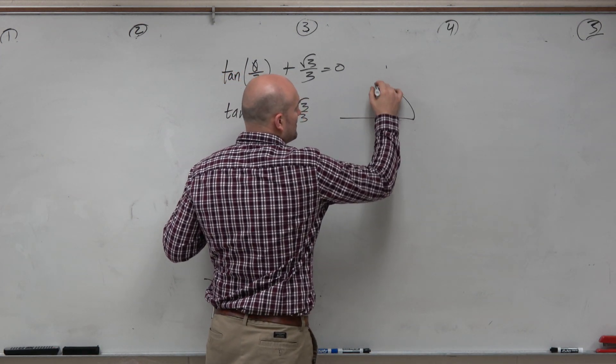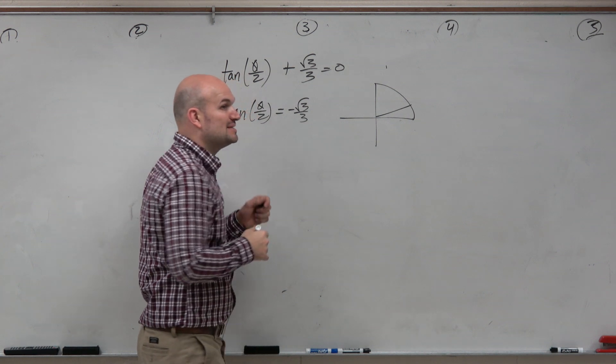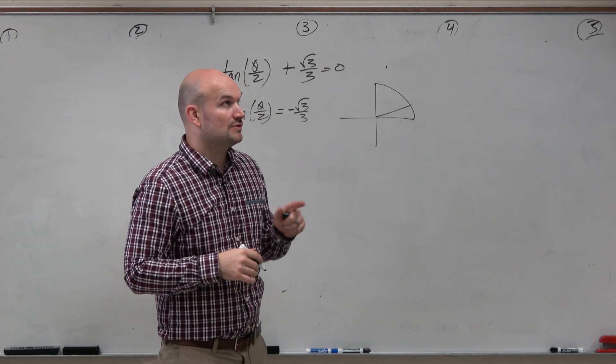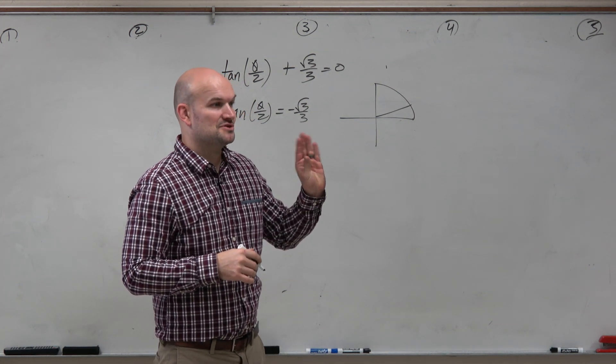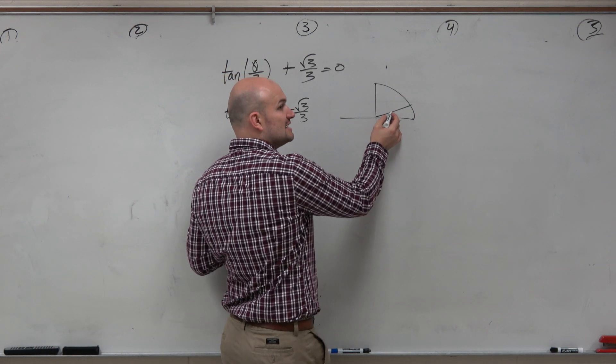So hopefully you guys can remember in the first quadrant, if you remember when tangent was pi over 3, square root of 3, that was pi over 3. So square root of 3 over 3 is the angle pi over 6.